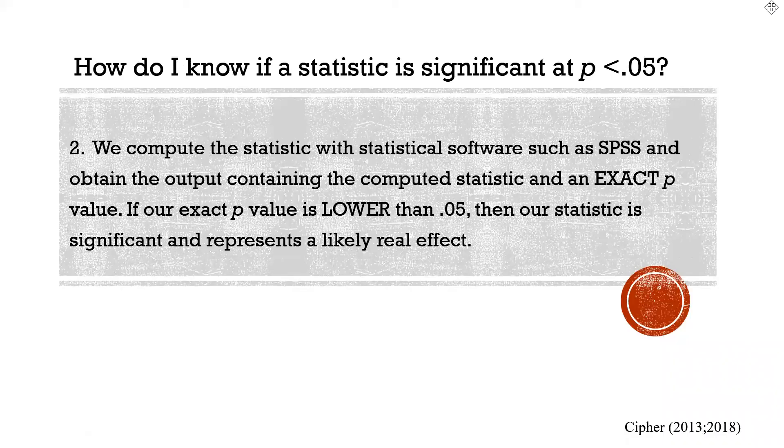So, if our exact p-value given to us in the statistical software output is less than 0.05, then, of course, we know our statistic is significant and represents a likely real effect. If we look at that exact p-value and it's greater than 0.05, then we retain our null and say there is no effect.